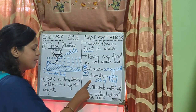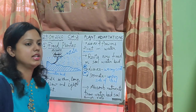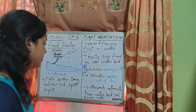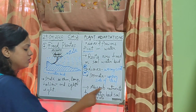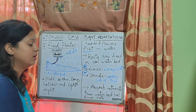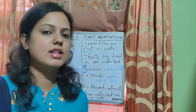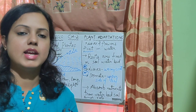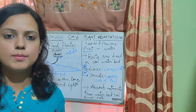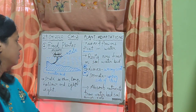So, this is the second adaptation: stomata are present on the upper side of the leaves. Now, these plants absorb nutrients from the soil of the water bed. Whatever soil is present in the water bed, the roots absorb nutrients from it, and then supply those nutrients upward to the stems, branches, leaves and fruits.